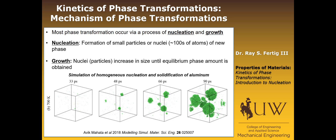Here is a picture of a simulated nucleation and growth process for pure aluminum. These are times of the simulation: 33 picoseconds, 48 picoseconds, 66 picoseconds, and 90 picoseconds, all done at 700 degrees Kelvin. In this early phase, you can see some nuclei starting to form — these little green spots. And at some later time, those nuclei have begun to grow.